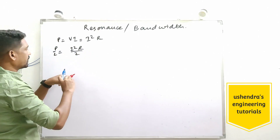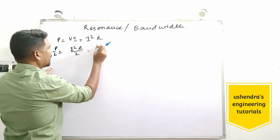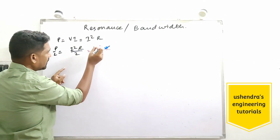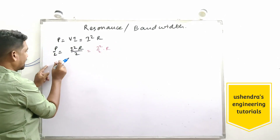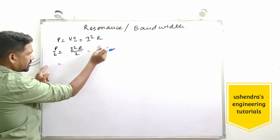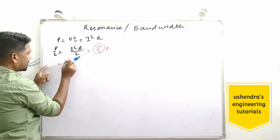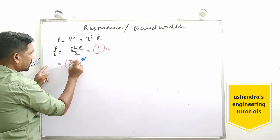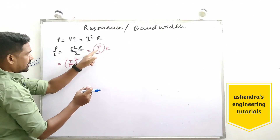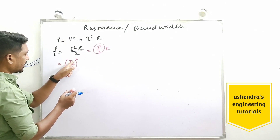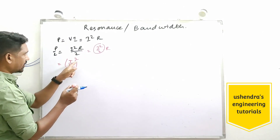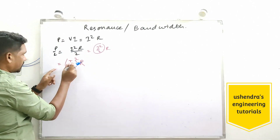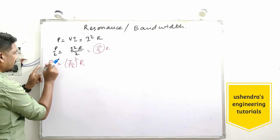A small modification: I²/2 × R can be rewritten as (I/√2)² × R — because squaring I/√2 gives I²/2, and R stays as is. This is the key modification at the half-power frequency.